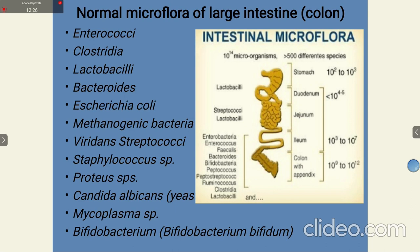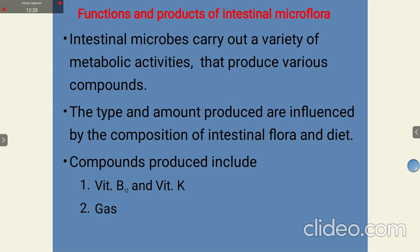Regarding the functions and products of intestinal flora: intestinal microbes carry out a variety of metabolic activities that provide various compounds. The type and amount produced are influenced by the composition of the intestinal flora. Compounds produced include vitamin B12, vitamin K, and certain gases, produced by microbes such as E. coli and others present in our intestinal tract.